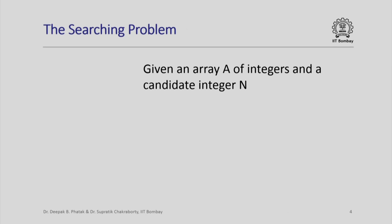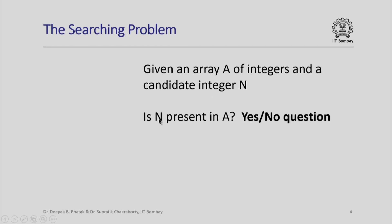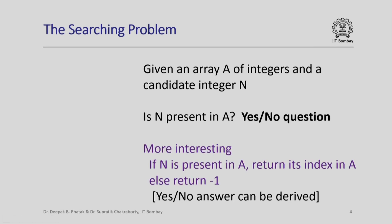So what is the searching problem? Suppose you are given an array of integers and a candidate integer n, and you are asked: is this integer n present in the array a? A more interesting version is: if n is present in a, return its index in the array; otherwise, return minus 1. Once you know the return value, you can figure out the yes/no answer as well.